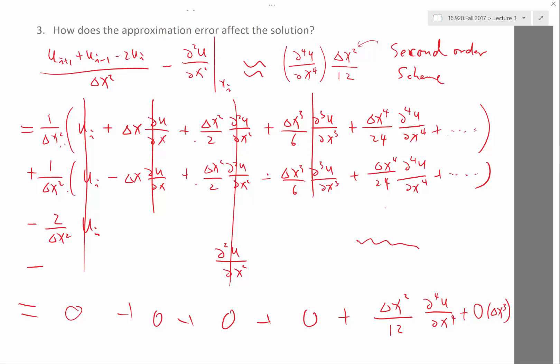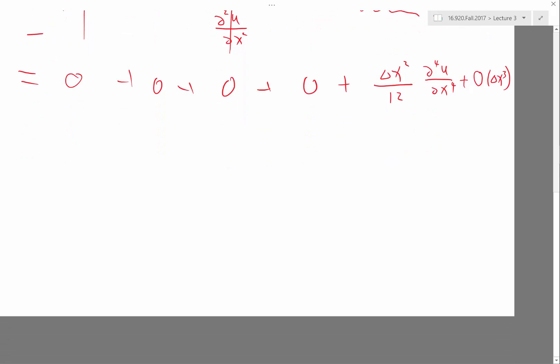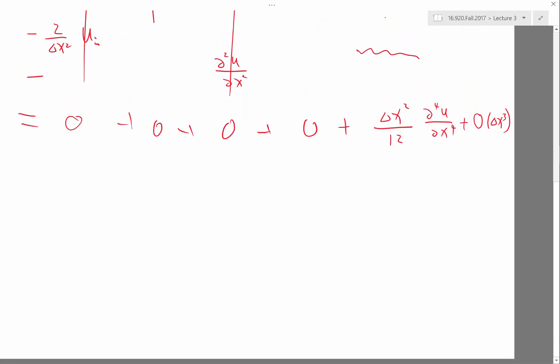The order of the scheme can be analyzed mathematically from the approximation error. It can also be seen computationally. So how do you convince yourself you get a third-order scheme or a second-order scheme? That is implemented correctly, right?